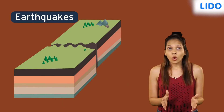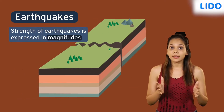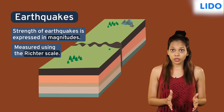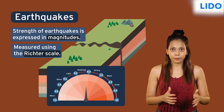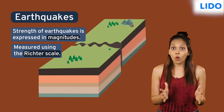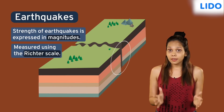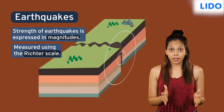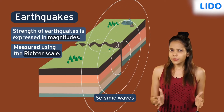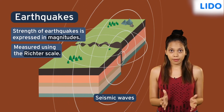The power or strength of an earthquake is expressed in magnitudes and is measured using the Richter scale. The shaking or tremors of the earth produce waves on the surface of the earth called seismic waves. These waves are recorded with the help of a seismograph.